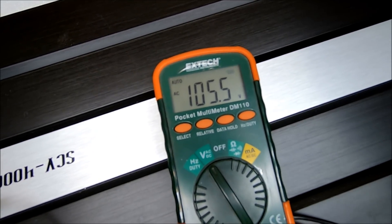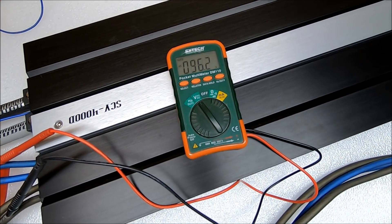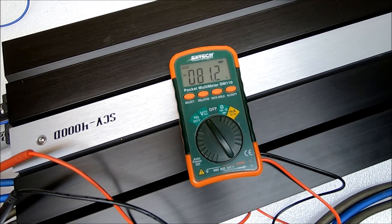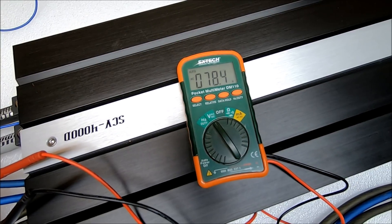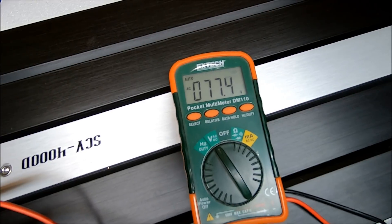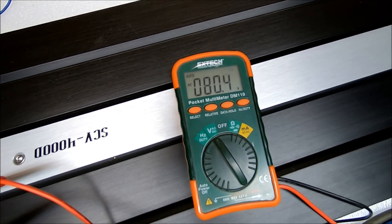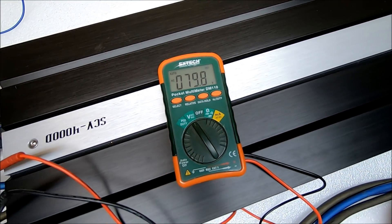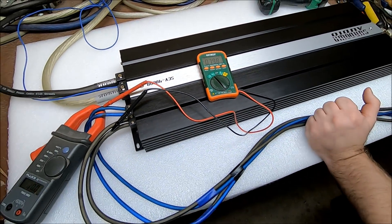Alright, adjusting back down. Right about there, let's see... distortion light's just barely off, right on that line, right around 79 volts.